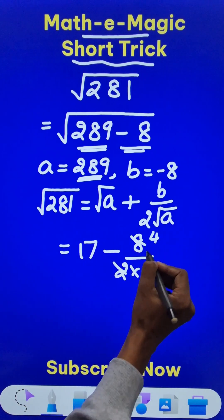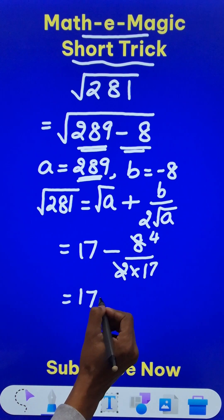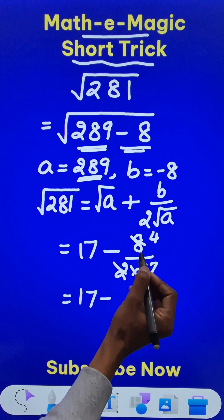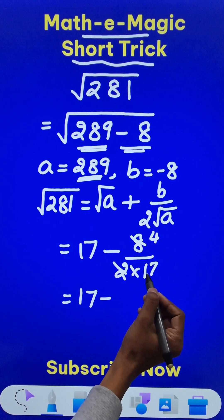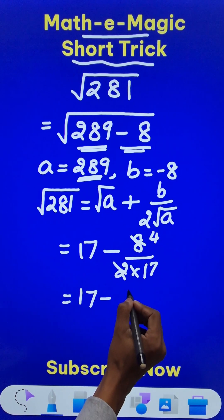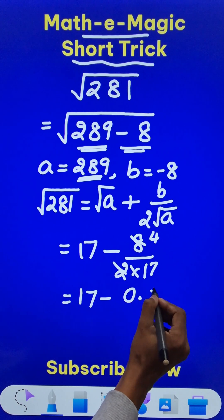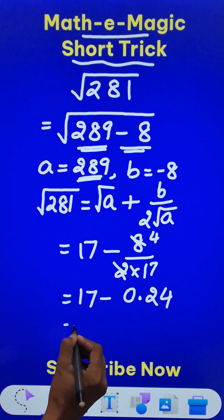So the 2 cancels this 4 times and this becomes 17 minus 4 upon 17. If you divide 4 by 17, you get approximately 0.24.